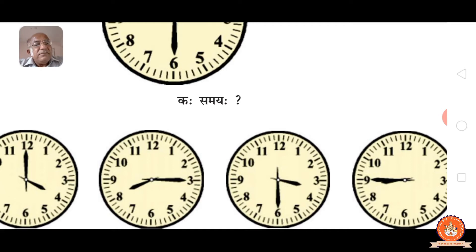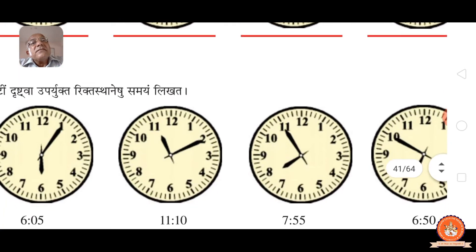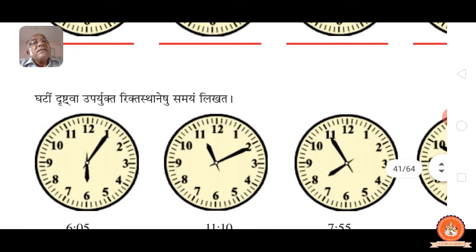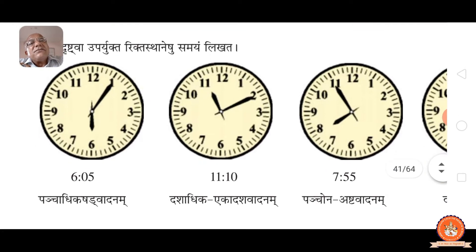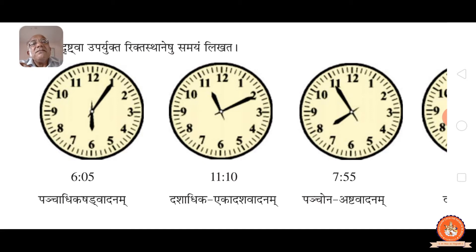See next. Gati drastva upyok rita staneshu shamayam likhata ha — see the clock and write the time. Time is also written in English; we have to write it in Sanskrit. Five minutes past six in English — in Sanskrit: pancha adhik chha vadanam. Pancha means five, adhik means more or past, chha means six. Five minutes past six.